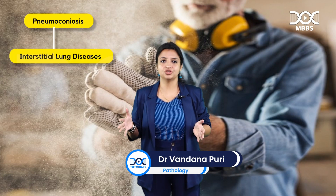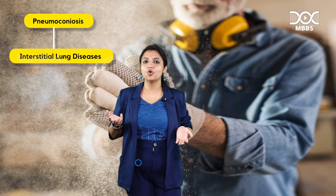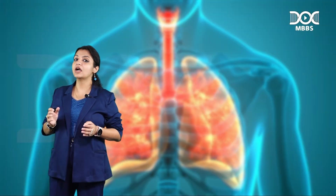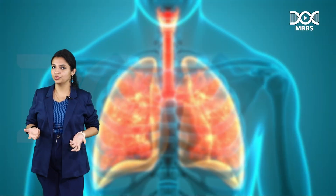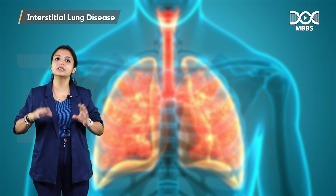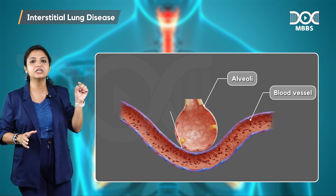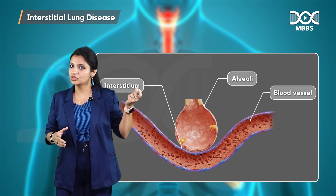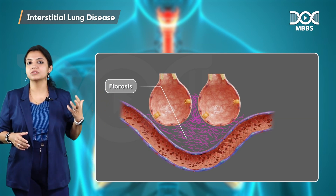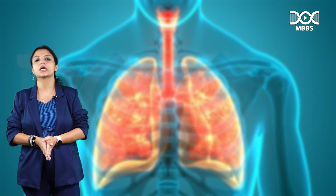Pneumoconiosis are a group of interstitial lung diseases which occur because of occupational hazards. They can be due to organic dusts or inorganic dusts. They are called interstitial lung diseases because the predominant changes occur in the interstitium. As you can see in the diagram, between the alveoli and blood vessel lies the interstitium, which normally is not visible, but in these diseases it expands, causing fibrosis or deposits.